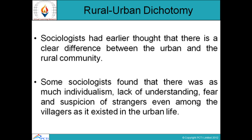Rural-Urban Dichotomy. Sociologists had earlier thought that there is a clear difference between the urban and the rural community. Some sociologists found that there was as much individualism, lack of understanding, fear and suspicion of strangers even among villagers as in urban life. Both kinds of communities differ greatly — in rural areas, the main way of producing livelihood is farming and agriculture, while in urban areas, the means of livelihood are employment in various fields.